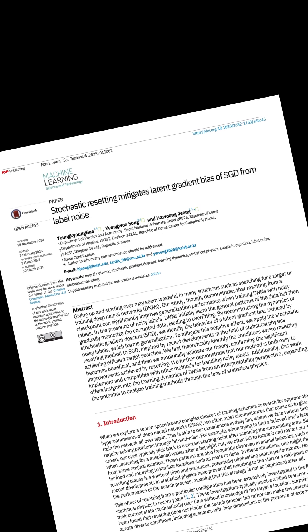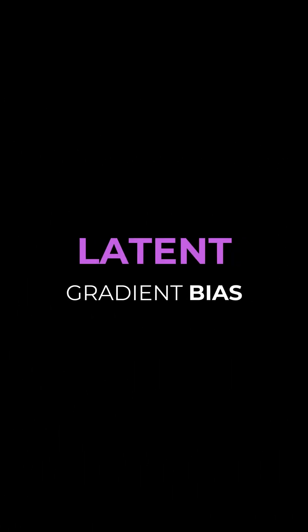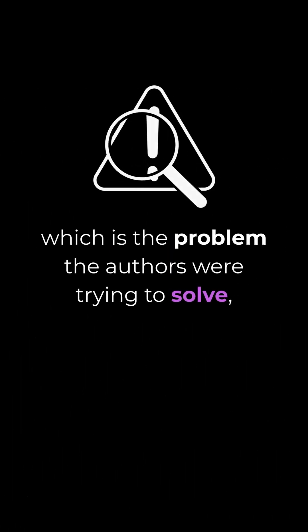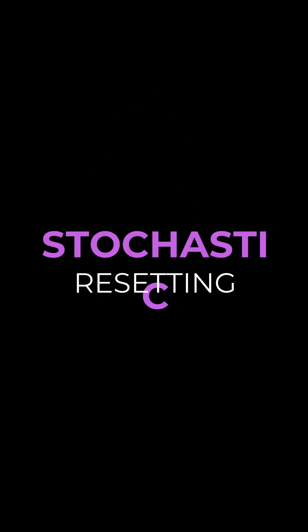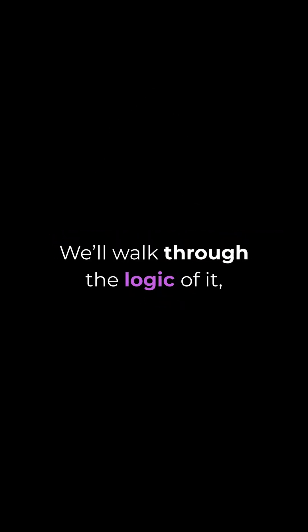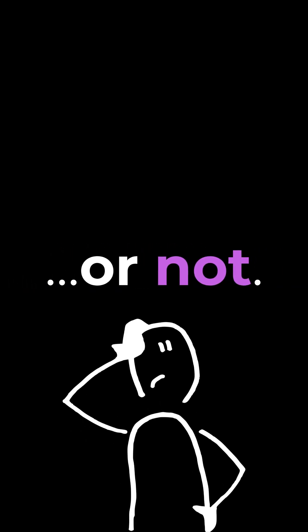Once that's under our belts, we'll talk about something called latent gradient bias, which is the problem that the authors were really trying to solve here. And then we'll turn to their idea — stochastic resetting. We'll walk through the logic of it, see how they implemented it, and find out if it really worked or not. Let's jump in.